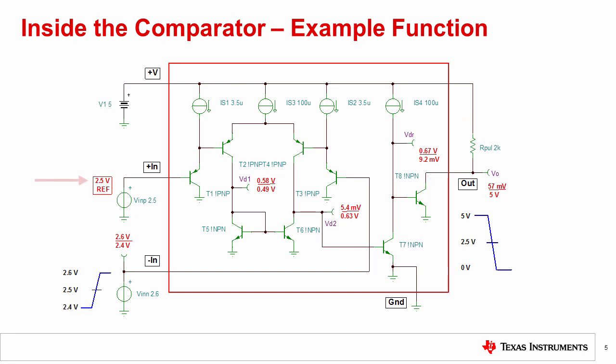Since T8 is off, its collector looks like a high impedance, and the output voltage of the comparator is pulled high by the 2 kΩ pull-up resistor connected to the positive power supply. Now let's keep the 2.5 volt reference on +IN, but change the input signal on -IN to 2.65 volts. We are now comparing 2.65 volts against the 2.5 volt reference. Transistors T4 and T6 will be on and saturated, making the voltage across T6 very low. T7 now turns off, allowing T8 to fully turn on and drive the comparator output voltage down to approximately 0 volts, or logic low.